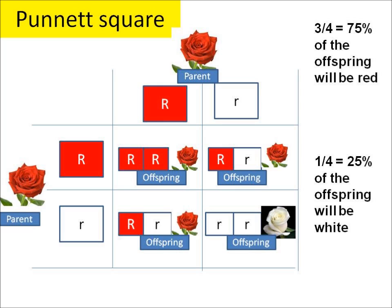In this example, both parents are exactly the same — both red and both heterozygous, big R little r. One offspring out of four will be big R big R and will be red. Another two offspring will be big R little r and will also be red. One out of four offspring will be little r little r and will be white. So overall, three out of four will be red and one out of four will be white.